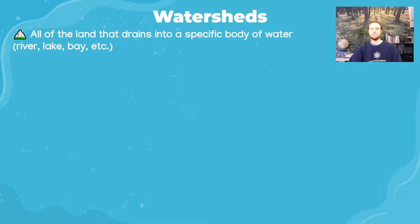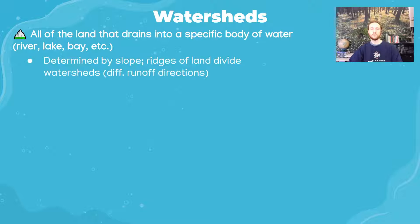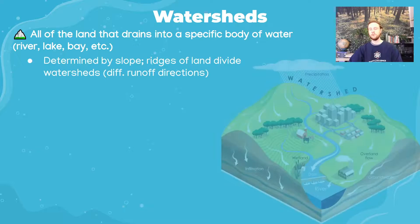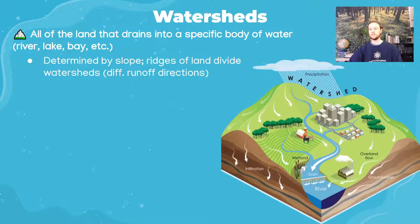A watershed is a body of land that all drains into a central body of water — that body of water could be a river, a lake, or a stream. Watersheds are determined by slope. You can think of a watershed as almost like a giant funnel of land that's all going to drain downward due to the force of gravity, pulling runoff towards the central body of water.